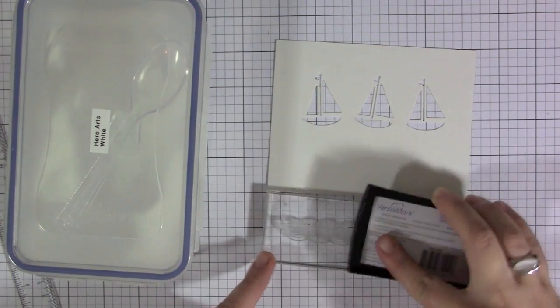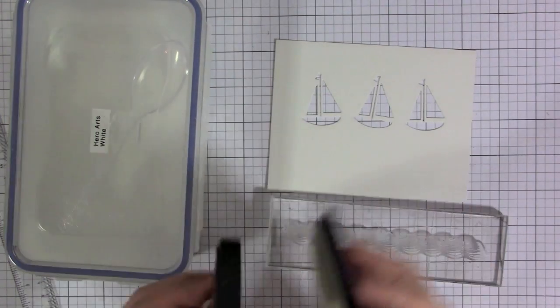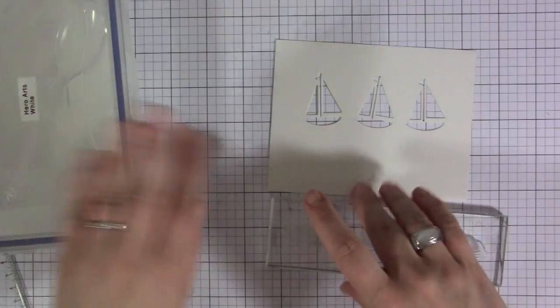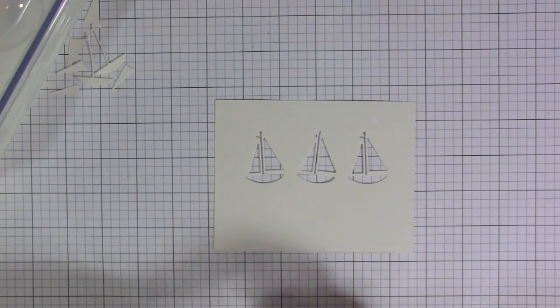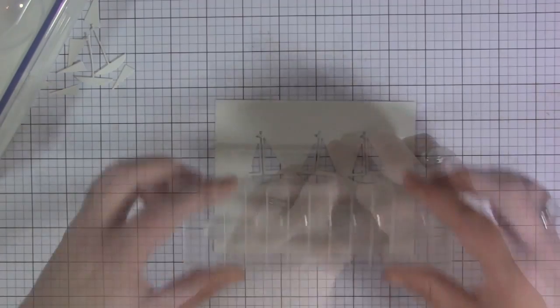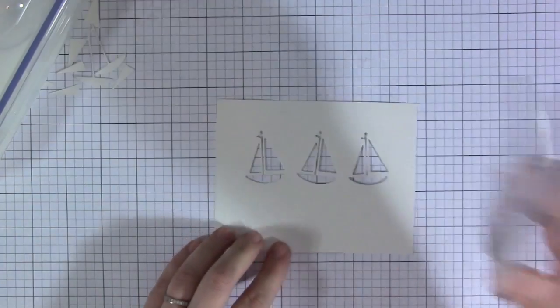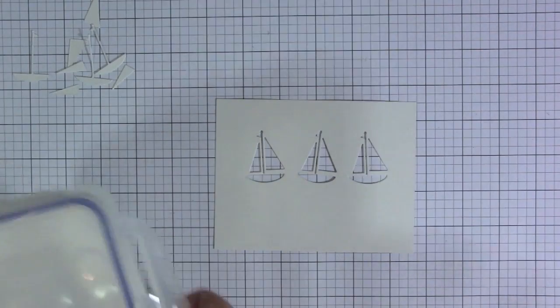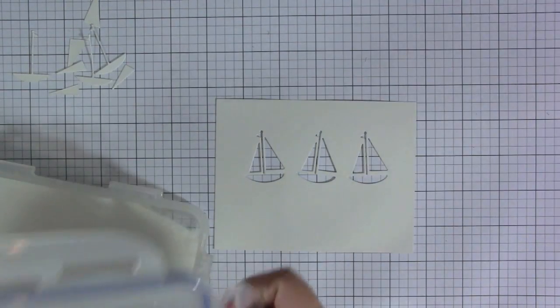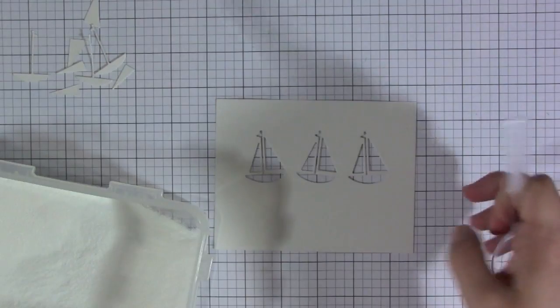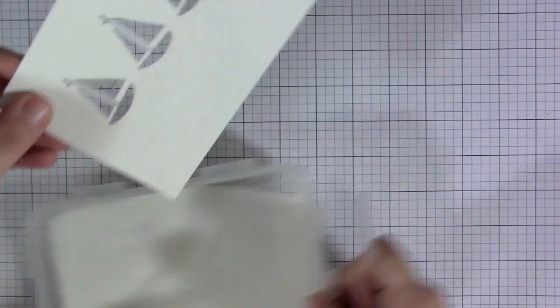Now I'm going to stamp this wave stamp directly underneath of them, and I'm going to stamp it with VersaMark ink so that I can heat emboss it with white embossing powder. When I position the stamp underneath the sailboats, I'm going to go a little bit up so that the bottoms of the sailboats actually look like they're in the waves.